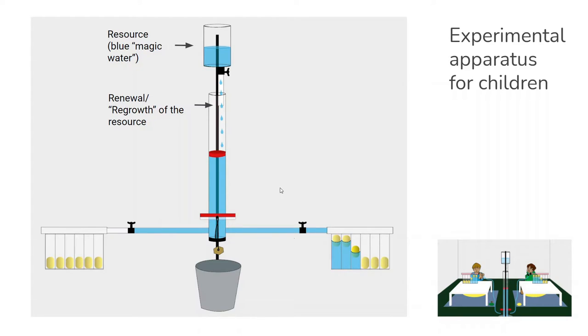Each child had a tab on their side where they could collect the resource, meaning the blue magic water, into these tubes. The thing is, the more tubes they filled up, the more candy they could get at the end. And of course, candy is something very interesting and precious for children, so each child was interested to get as much candy as possible.